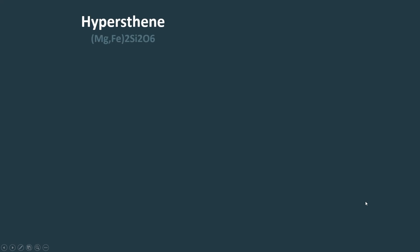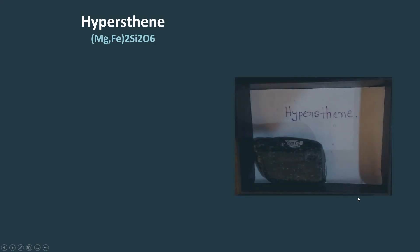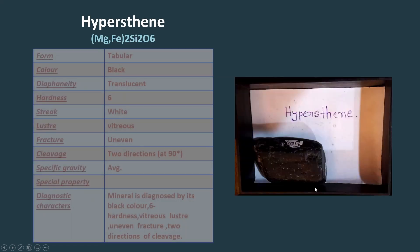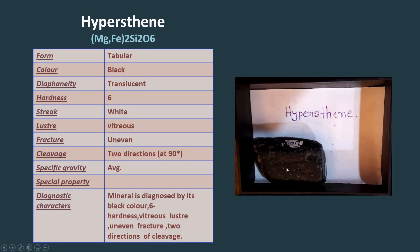Next, hypersthene pyroxene mineral, whose form is tabular. Its color is black, it is translucent in diaphaneity, it has six hardness, white streak, vitreous lustre, and two-directional cleavage at 90 degrees.